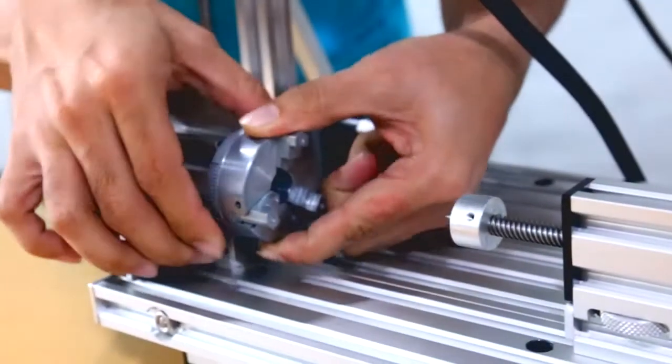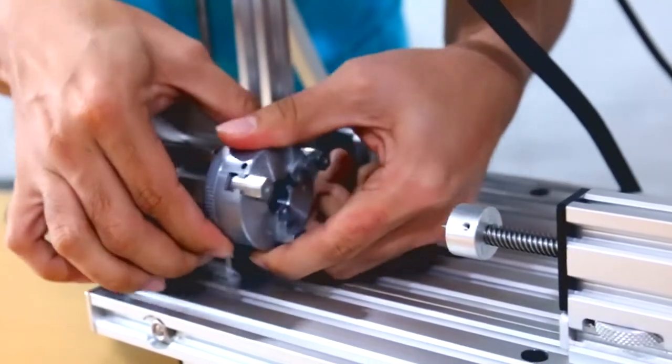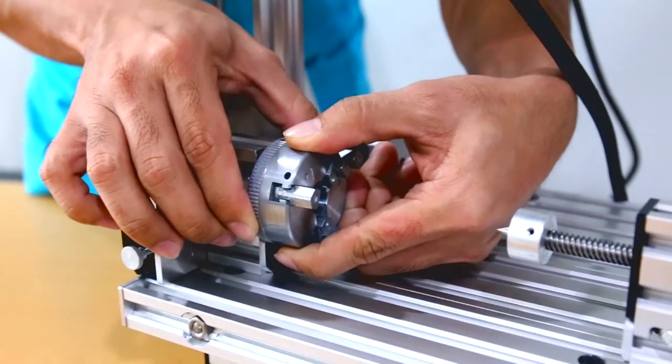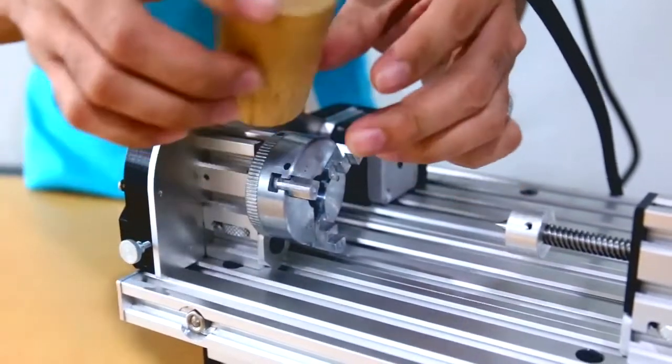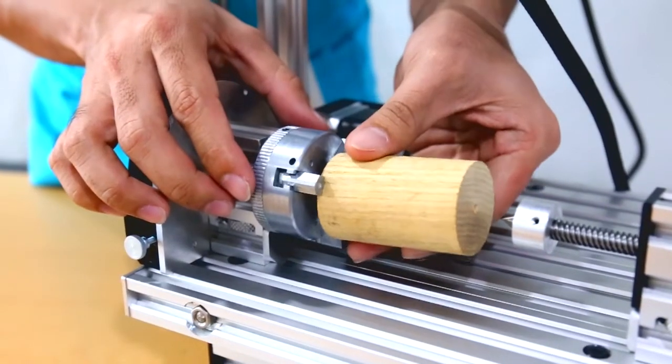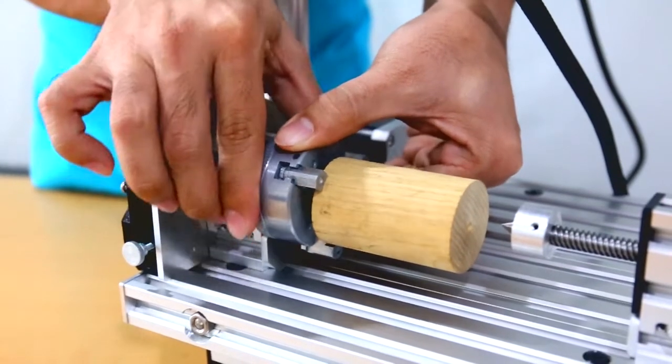Little by little, rotate the chuck in a reverse direction as shown to make an opening for the blank. Next, get the blank material and place it on the chuck as shown. Lock it by rotating the chuck in a counter clockwise direction.